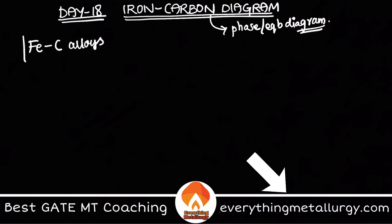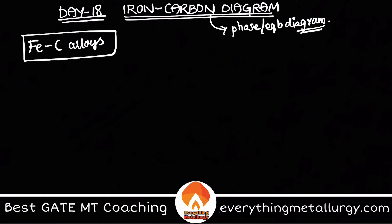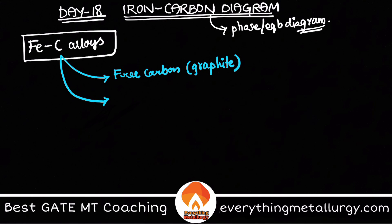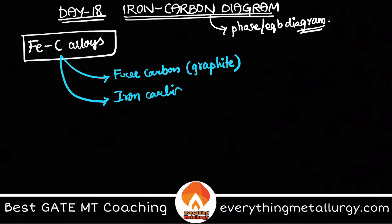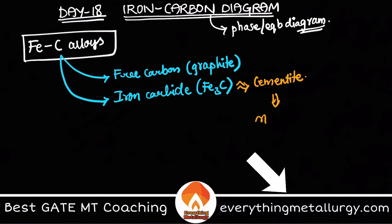In iron-carbon alloys, carbon may be present in two different forms. Number one is free carbon, which is nothing but graphite, or it may also be present in the form of an intermetallic carbide — which is iron carbide, Fe₃C.